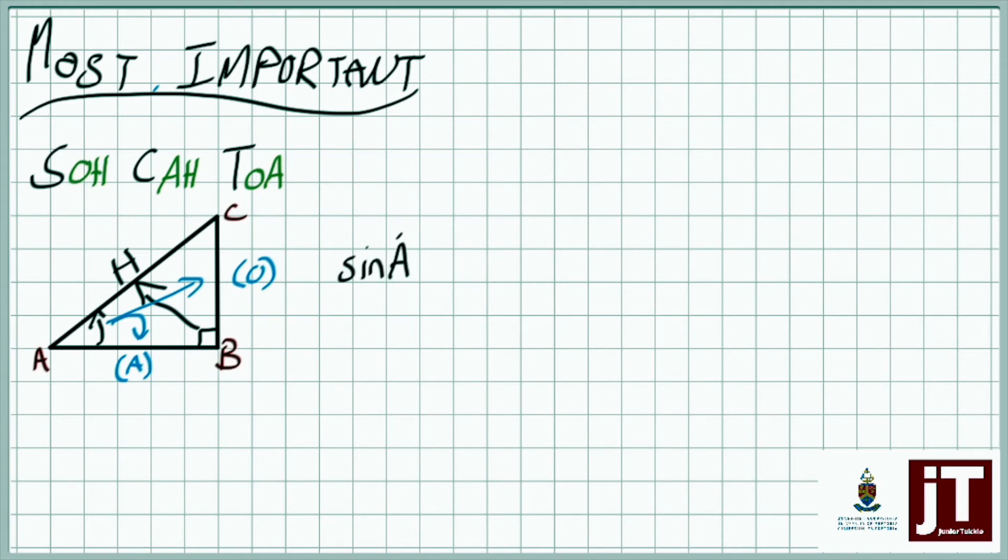If I now ask you what is the value of sine of A, in other words the ratio, which sides am I relating to one another? Well, opposite over hypotenuse. So in other words it's the ratio that exists between BC and AC. Simple and as easy as that.